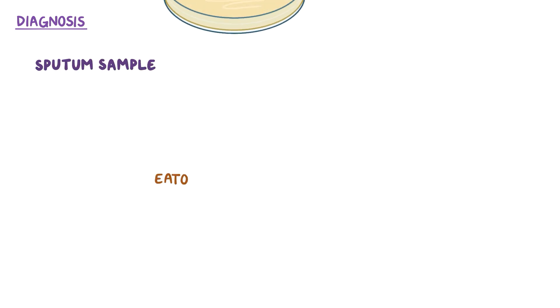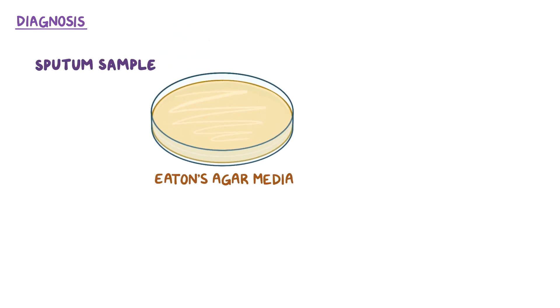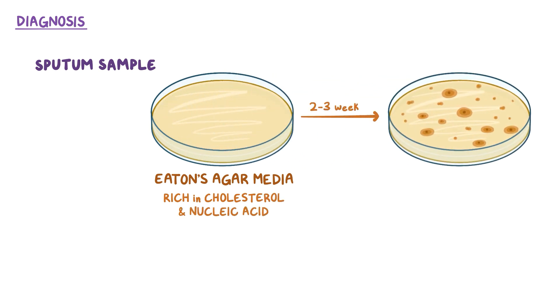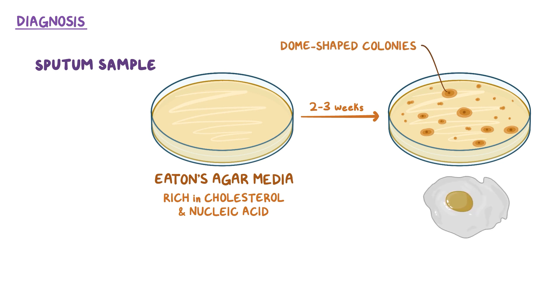Besides imaging, diagnosis can also be made by getting a sputum sample and growing the organism on Eaton's agar media, which is rich in cholesterol and nucleic acids. Growth takes about 2-3 weeks, and mycoplasma pneumoniae forms dome-shaped colonies which look like fried eggs. But this takes a long time, so growing the bacteria is not commonly done.